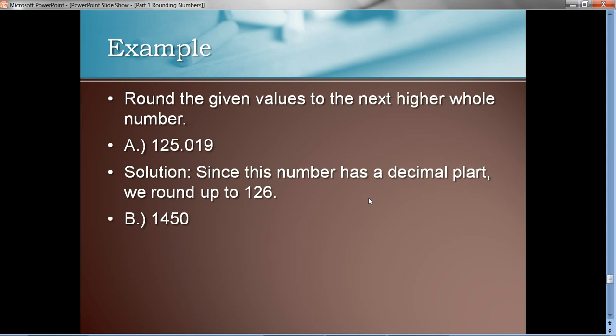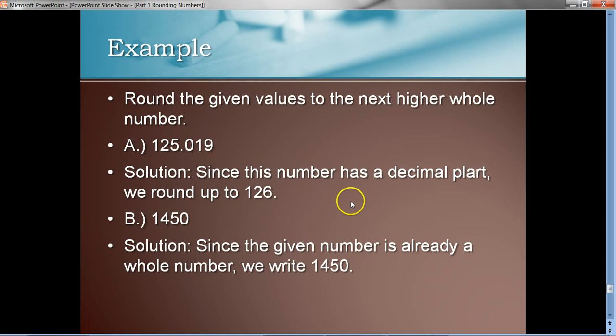Second example here. The given number is 1,450. Well, look. There's no decimal part here, is there? So, it's already a whole number. So, we can just copy that down as the answer. So, that's all there is to it. That's rounding numbers in Essentials of Statistics.